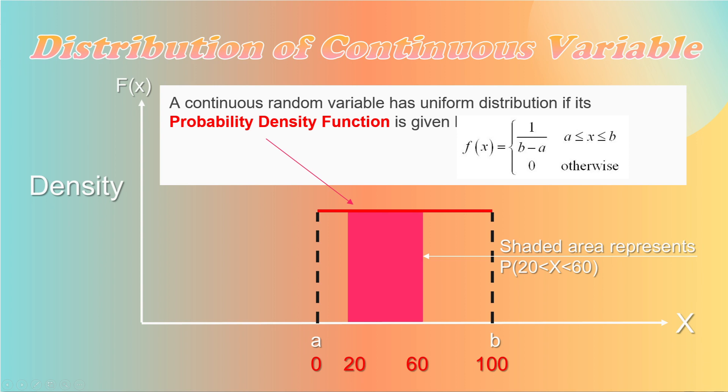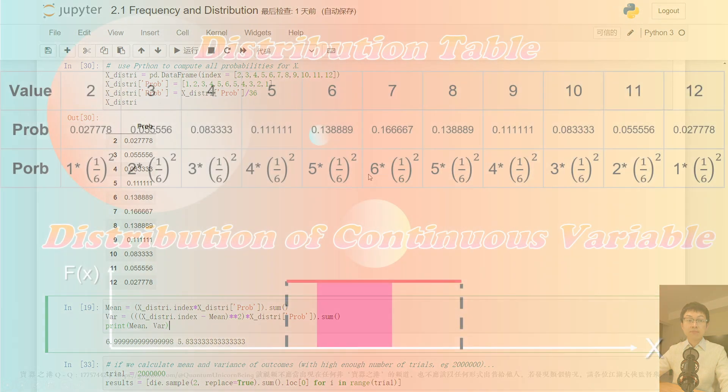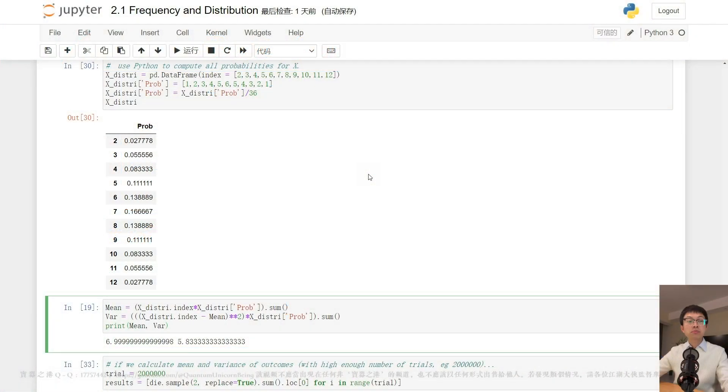In summary, for discrete random variables, we can easily find the probability by checking the table of distribution. However, it is more complicated in the case of continuous random variables. The probability is the area under the probability density function curve, which can take any shape. It is important to note that the PDF, or probability density function, should not be confused with the probability.